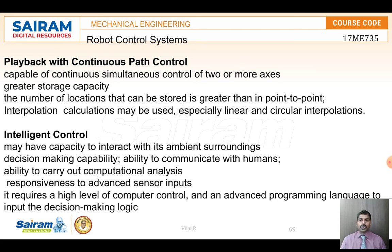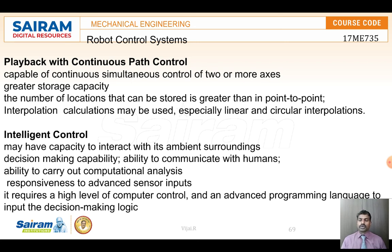The fourth method is intelligent control, where the robot senses and acts on its own decisions based on inputs already fed into it — similar to how games respond to movement. It requires advanced-level programming languages. The robot has computational analysis ability and operates automatically according to the inputs it receives. These are all the types of robotic control systems.